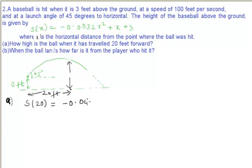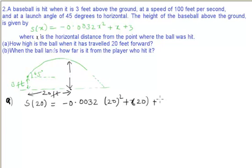S(20) equals minus 0.0032 times x squared, which is 20 squared, plus x, which is again 20, plus 3. So if we calculate this height,